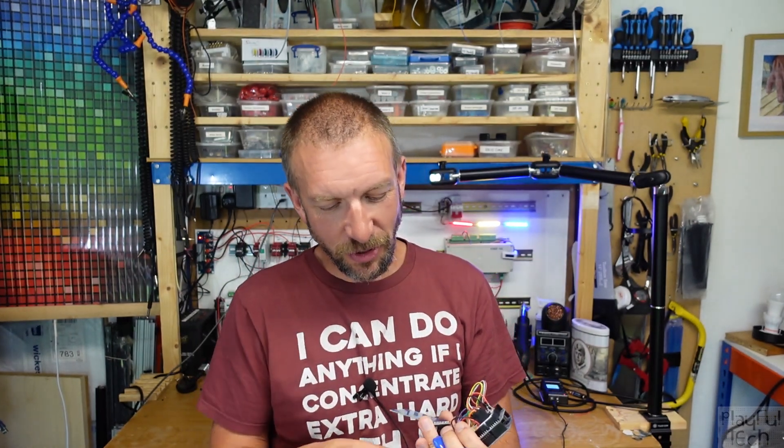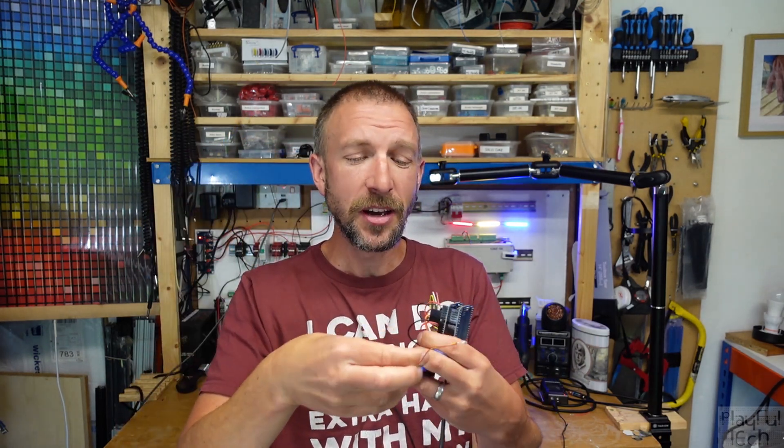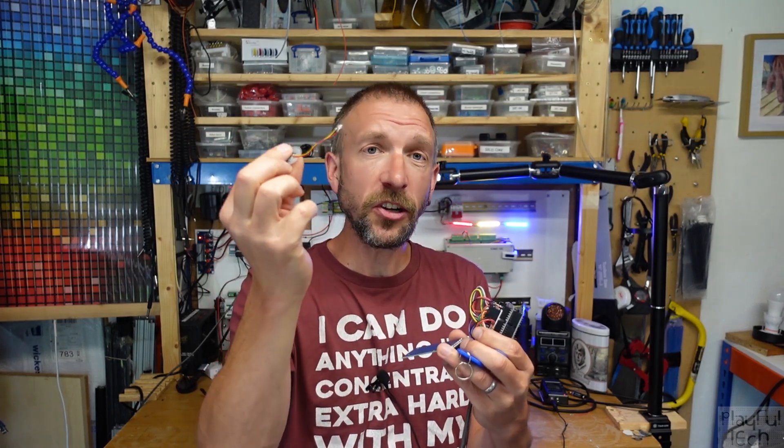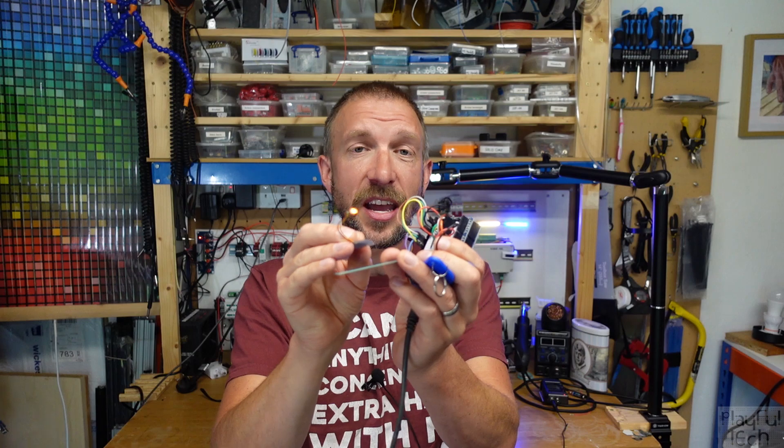When you take them apart, what you find inside is an antenna and an RFID chip, almost exactly the same as you'd find in one of these RFID tags, together with a little bit of additional circuitry that powers the LED.